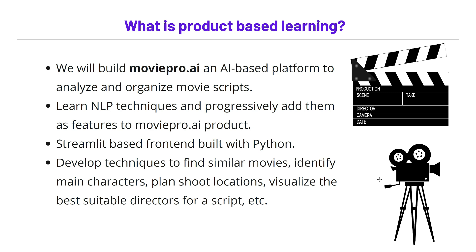These studios have quite a lot of movie scripts and related information — scripts, casting details, director details, and more. We'll see how to build a platform that can find similar movies to a given script, identify main characters to help with casting, plan shoot locations, and visualize the best suitable directors for a given script. In short, we'll learn NLP techniques and progressively add them as features to the MoviePro.AI product.